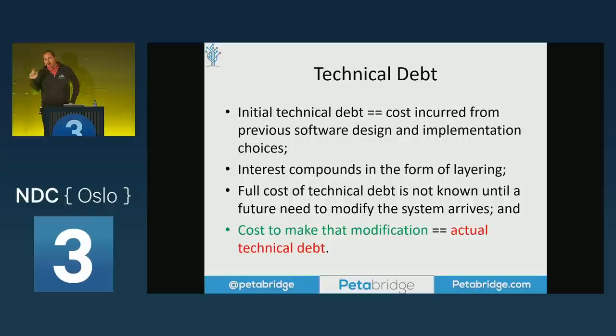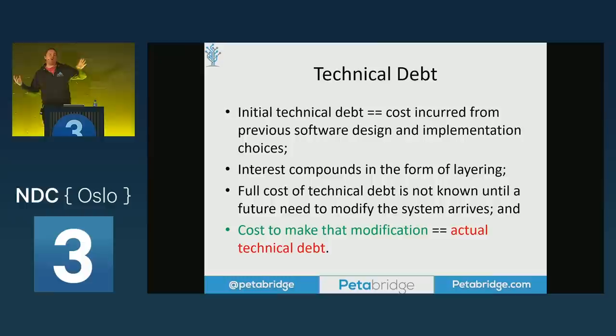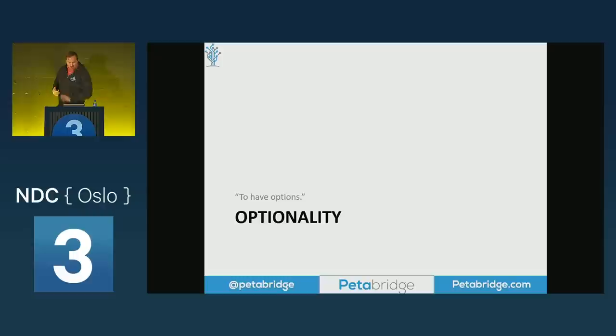But the failure to account for problems you can easily see coming down the road — two, five, ten years in the future — is something that you as an architect need to price into your designs sooner rather than later. That's really the essence of optionality. Technical debt's full amount is expressed at the time you have to make a change. If you have to migrate from .NET Framework to .NET 6, you're not going to know the full cost until you get into the weeds.